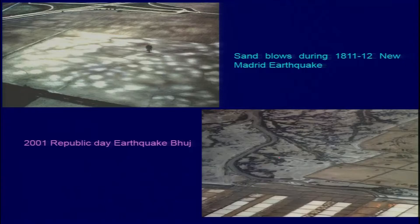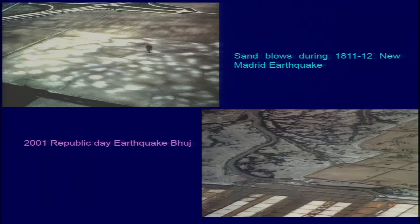This is the coastal region, and most of the areas you see are tidal channels. The square white areas you see are the salt agricultural fields — salt pans which people commonly use for producing salt. All the black patches you see here are the sand boils which developed during the ground shaking, and the whitish patches are from the photograph taken after the 1811 earthquake.